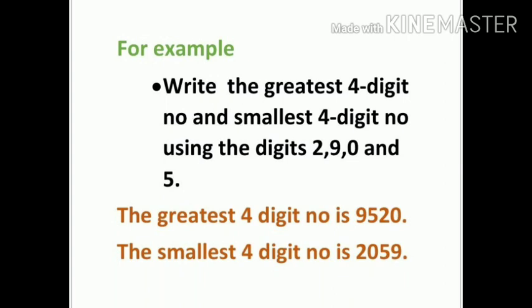Now let's see the example. Here we have to form the greatest and smallest four digit number using the digits 2, 9, 0, and 5. The greatest four digit number is formed by arranging the digits in descending order, so the number is 9520.